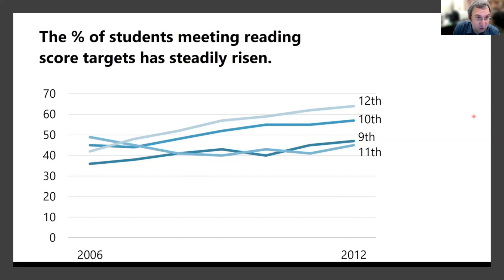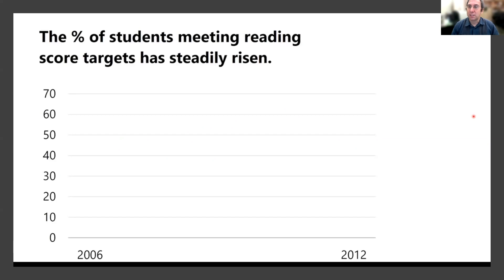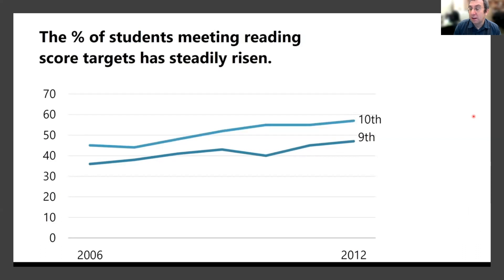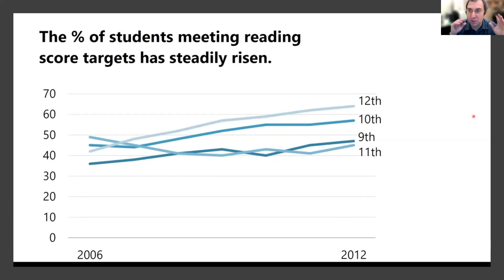I teach my students a trick for presentations: clean the canvas. Set the stage by showing years along the bottom and percent of students meeting the reading target along the top, then start with just the ninth graders. Talk about the ninth graders — how do we explain that little dip? Then bring in the tenth graders. You're building up a complicated plot step by step. All it took was starting with the final plot and then showing it in reverse order, revealing it piece by piece.